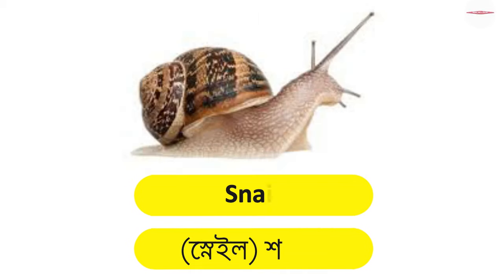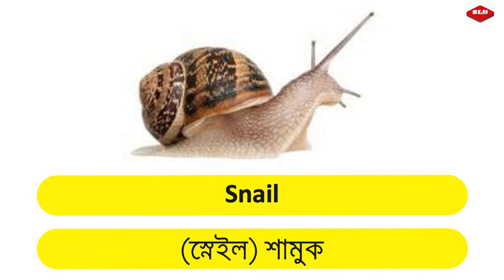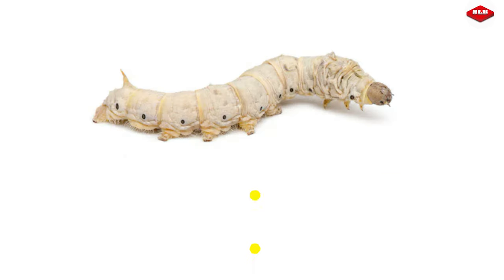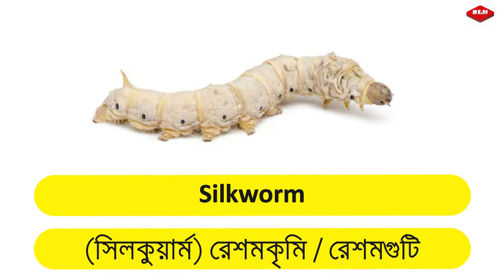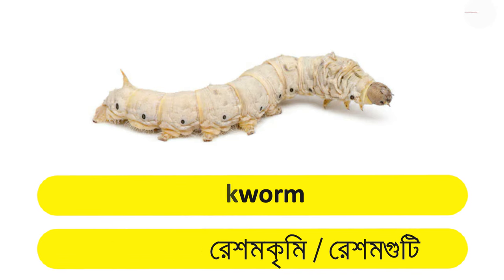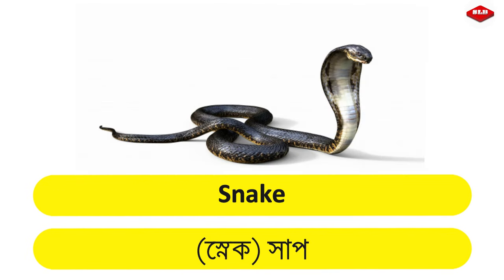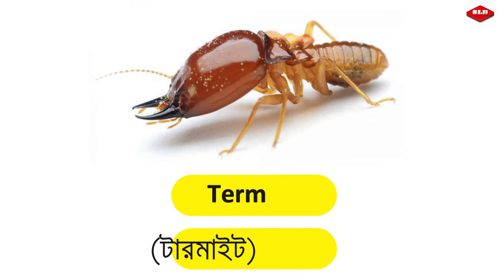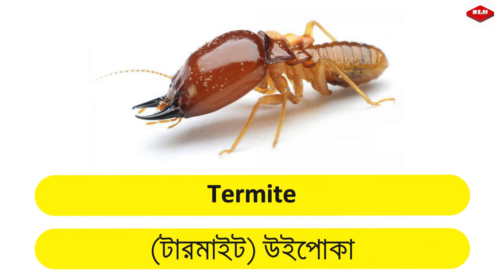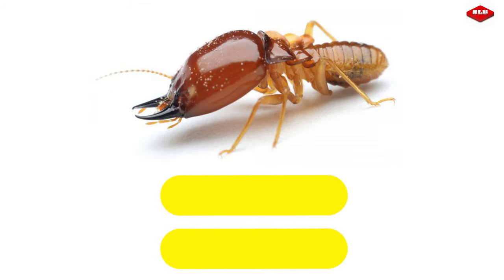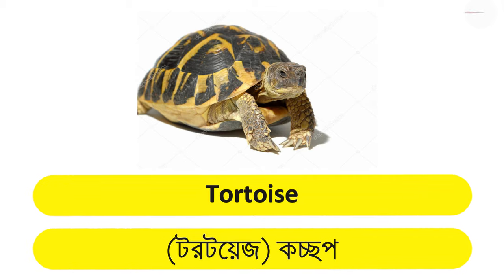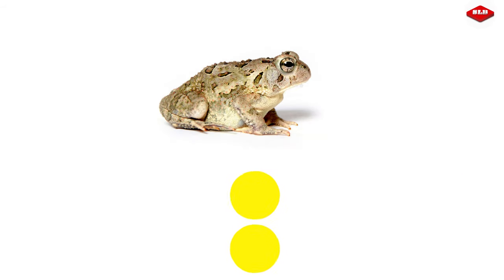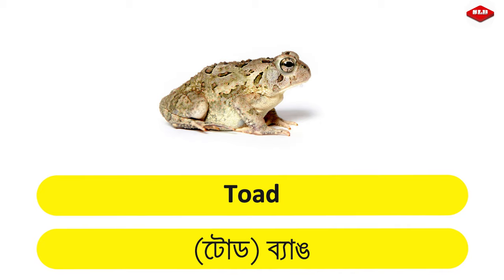Snail – Shamuk. Silkworm – Resom Kirmi, also known as Bar Resom Goetie. Snake – Sharp. Termite – Uipoka. Tortoise – Kochop. Toad – Bang.